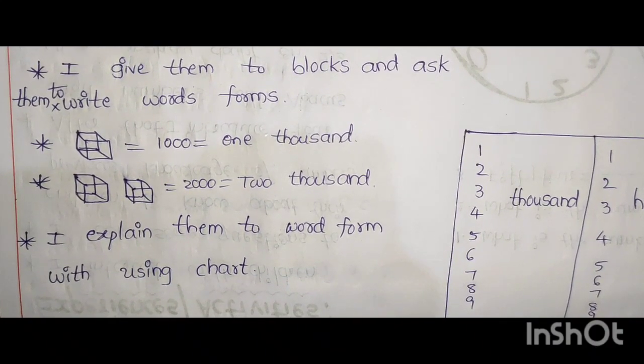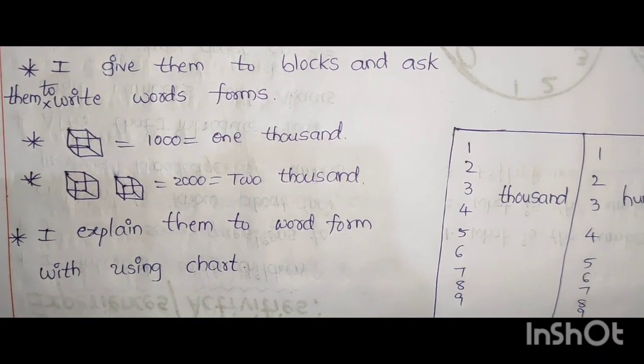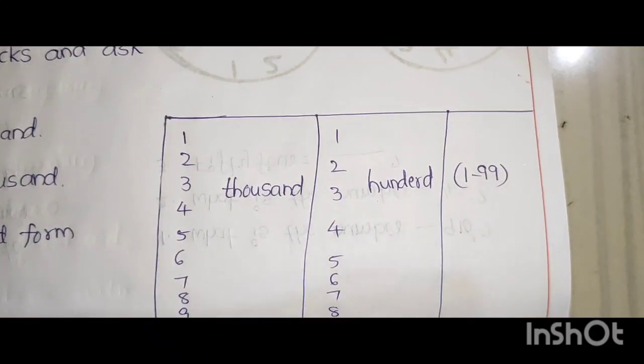Like this chart. 1, 2, 3, 4, 5, 6, 7, 8, 9, 1000. 1, 2, 3, 4, 5, 6, 7, 8, 9, 100. And 1 to 99.